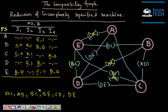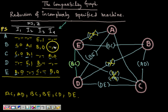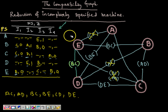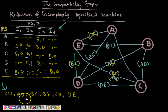For that, we need to develop the merger graph first. In this example we have an incompletely specified machine with present states and transitions and outputs on inputs I1, I2, I3, and I4. I have already developed the merger graph for this machine. In this merger graph, the compatible pairs we find are: AC, AD, BC, BE, CD, and DE.